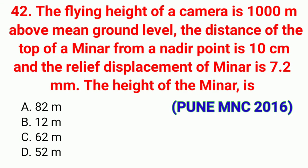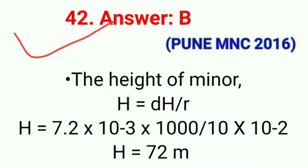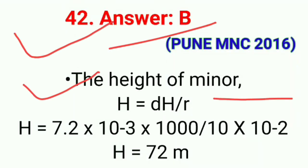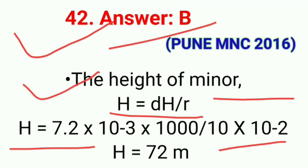Question number forty-two: The flying height of a camera is 1000 meters above mean ground level. The distance of the top of a minaret from the nadir point is 10 cm, and the relief displacement of the minaret is 7.2 mm. The height of the minaret is. The correct answer is option B, 72 meters. Using the formula h = d·H/r: h = (7.2 × 10⁻³ × 1000) / (10 × 10⁻²) = 72 meters.